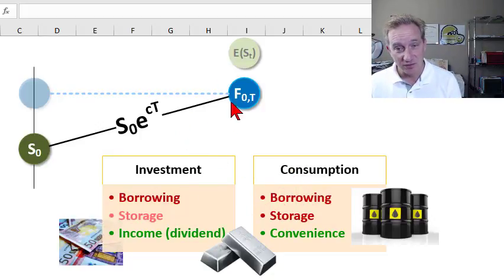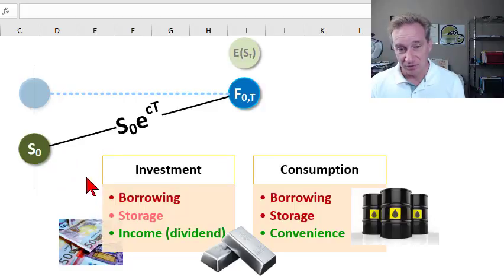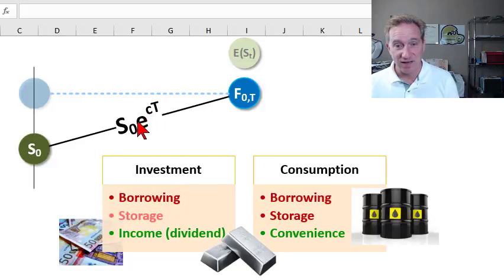Two of the factors increase or put upward pressure on the theoretical futures price because they are costs of ownership. The first one is borrowing cost because regardless of whether it's an investment or consumption commodity, whoever carries or owns the commodity in the meantime needs to use cash to buy it. They either need to borrow or incur the opportunity cost of their cash. So that borrowing is in red, is a basic factor that appears in all the cost-of-carry models. We denoted that R. For a consumption commodity, I'll just put an R there.